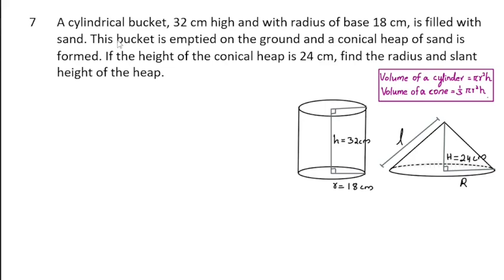A cylindrical bucket, 32 cm high and with radius of base 18 cm, is filled with sand. This bucket is emptied on the ground and a conical heap of sand is formed. If the height of the conical heap is 24 cm, find the radius and slant height of the heap. This cylindrical bucket is full of sand. Its height is 32 cm and the radius of the bucket is 18 cm.